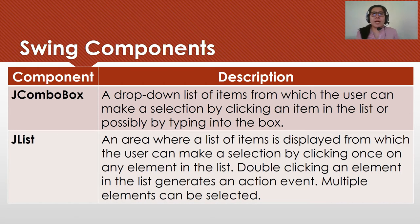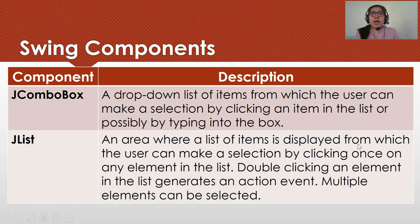For J-Combo Box, this is equivalent to the Choice element in AWT. It is a drop-down list of items from which the user can make a selection by clicking an item in the list or by possibly typing into the box. For J-List, it is an area where a list of items is displayed from which the user can make a selection by clicking once on any element. Double-clicking an element in the list generates an action event, and multiple elements can be selected.